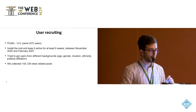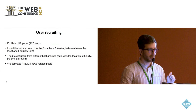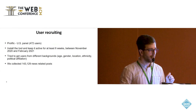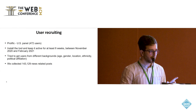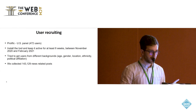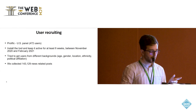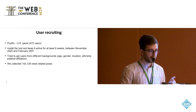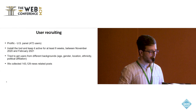We then recruited 572 US-based users using the crowdsourcing platform Prolific, and asked them to install our monitoring tool and keep it active for six weeks. The data collection was performed around the US presidential elections, and we tried to get users from different backgrounds — representations from all ages, genders, locations, ethnicities, and political affiliations in the United States. Using this data collection, we were able to collect over 143,000 news-related posts.